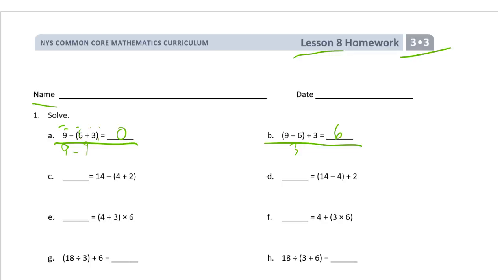So here's our next one. We have 14 minus 4 plus 2 and 14 minus 4 plus 2. But for this one here, 4 plus 2 is 6. 14 minus 6 is 8. And for this one, d, 14 minus 4 is 10. And we're looking at 10 plus 2, which is 12.